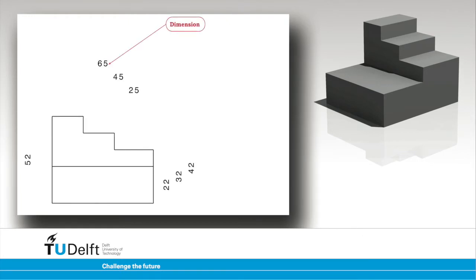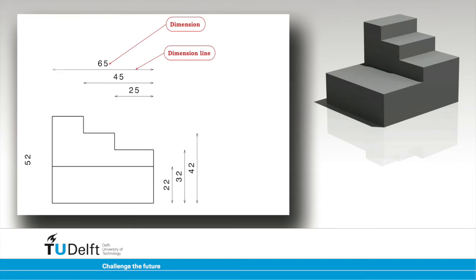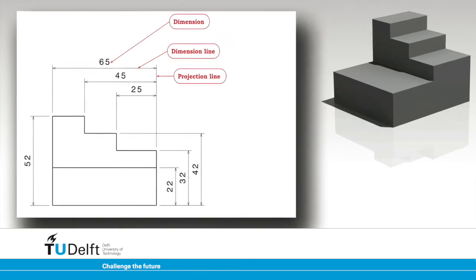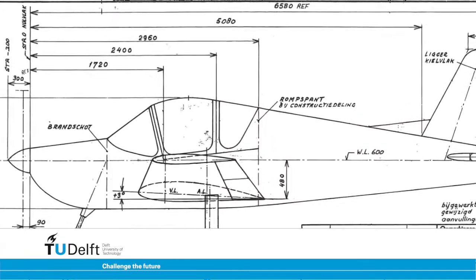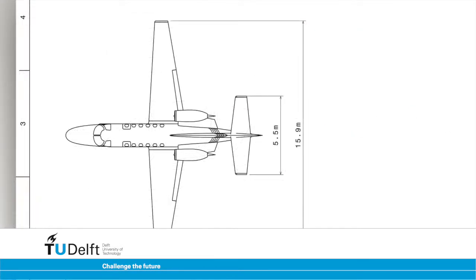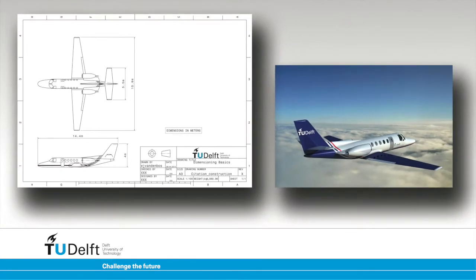The dimension is a value stated in millimetres. A dimension line will be drawn as a thin continuous line with arrowheads. Projection lines are drawn as thin continuous lines perpendicular to the dimension line. Millimetres are used in all engineering drawings, even when large objects are documented. In some cases, other units are used, but this must be clearly stated in a note on the drawing.